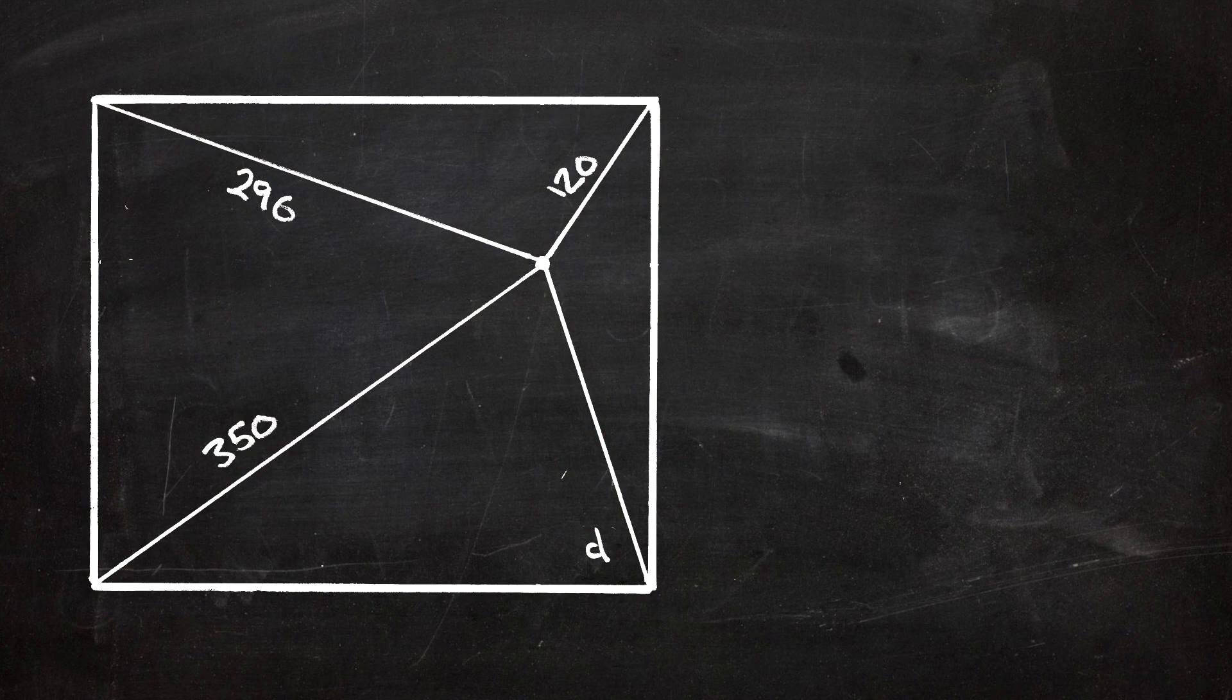For example, imagine you're in a park, or something like that, and we can say A, B, C, and D are paths. Then if A was equal to 350 metres, and B was equal to 120 metres, C equals 296 metres, then we could calculate D.